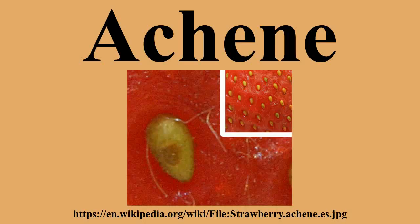A caryopsis, or grain, is a type of fruit that closely resembles an achene, but differs in that the pericarp is fused to the thin seed coat in the grain. A utricle is like an achene, but the fruit is bladder-like or inflated. Fruits of sedges are sometimes considered achenes, although the one-locule ovary is actually a compound ovary.